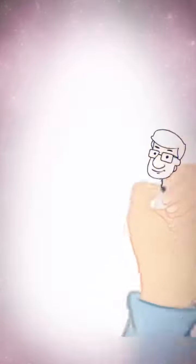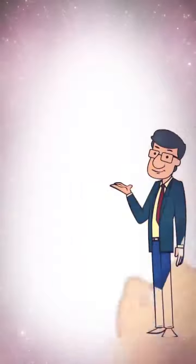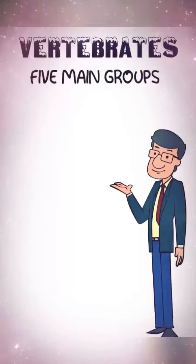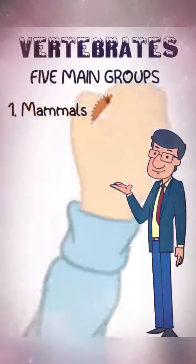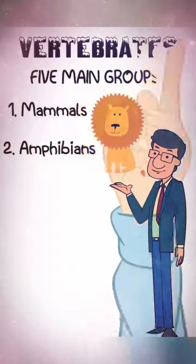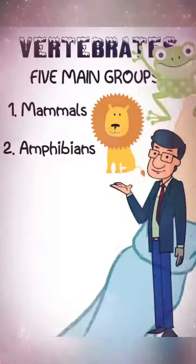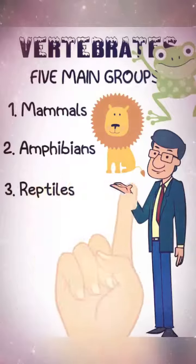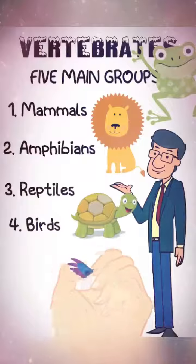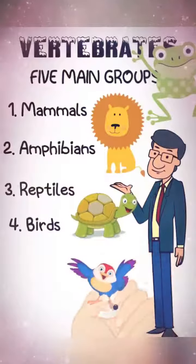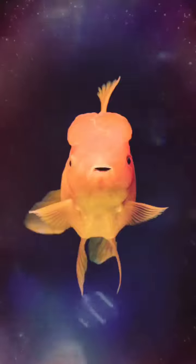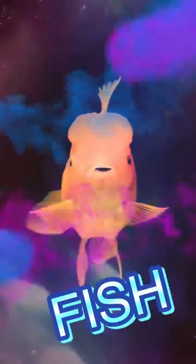All vertebrates are divided into five main groups. If you're in one of these groups, you are definitely a vertebrate. All mammals are vertebrates. All amphibians are vertebrates. All reptiles are vertebrates. All birds, and you guessed it, all fish are vertebrates. Hey, that's cool — I'm a fish.